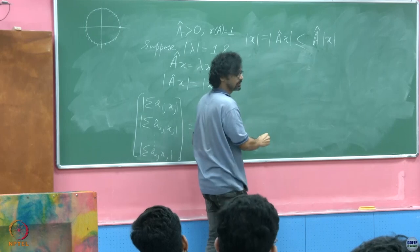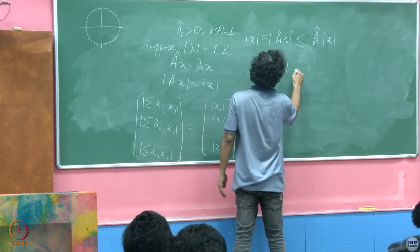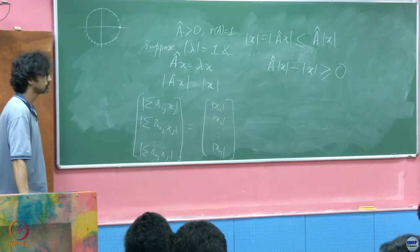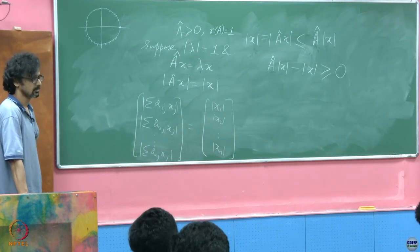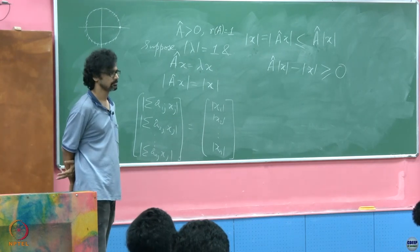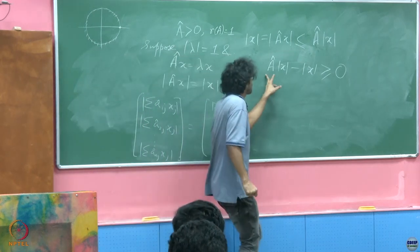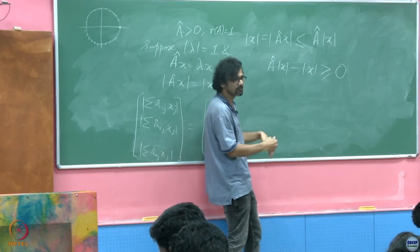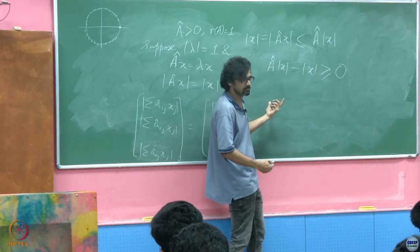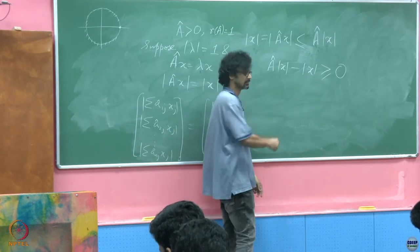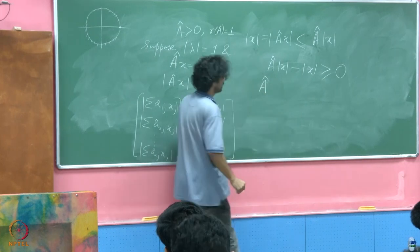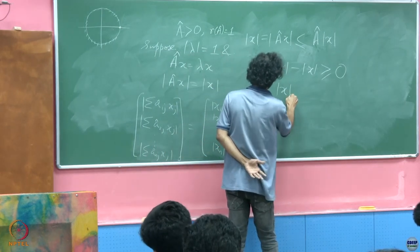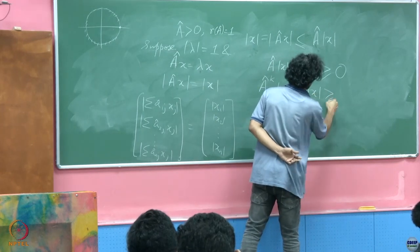Carrying forward this inequality: what we have is Â acting on |x| minus |x| ≥ 0. What does this remind you of? If the action of Â on a real vector has the effect of increasing its entries, then we can say that Â raised to higher powers — this must also be true.